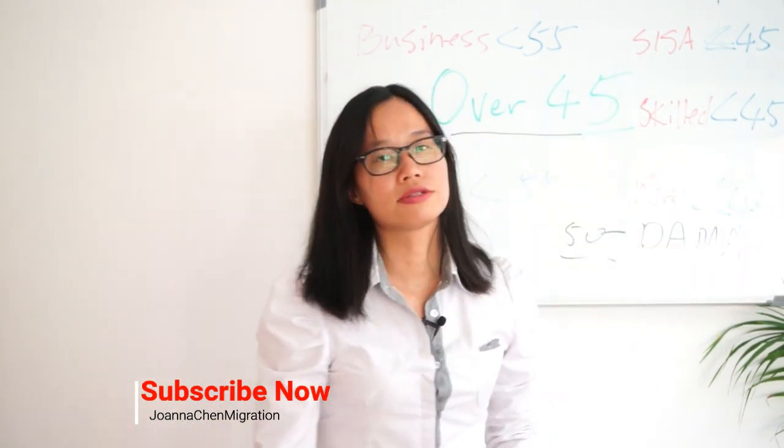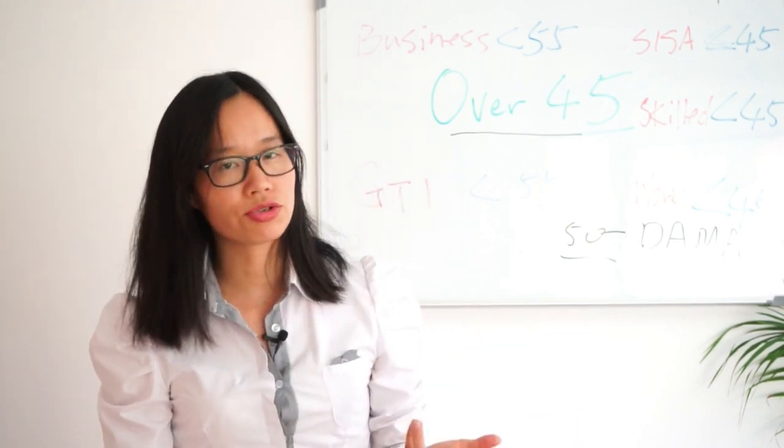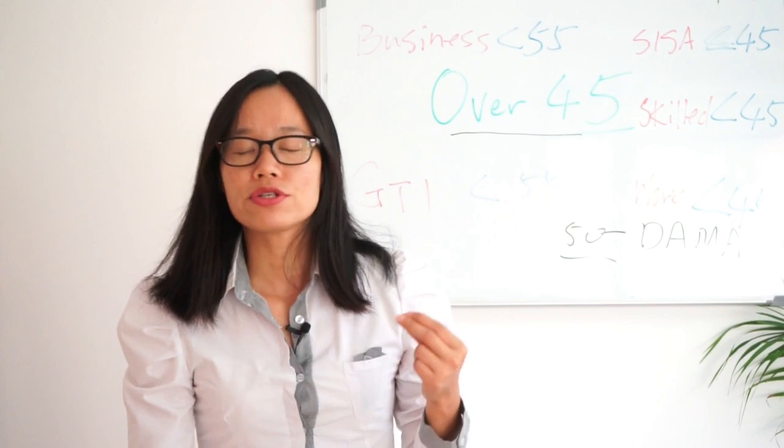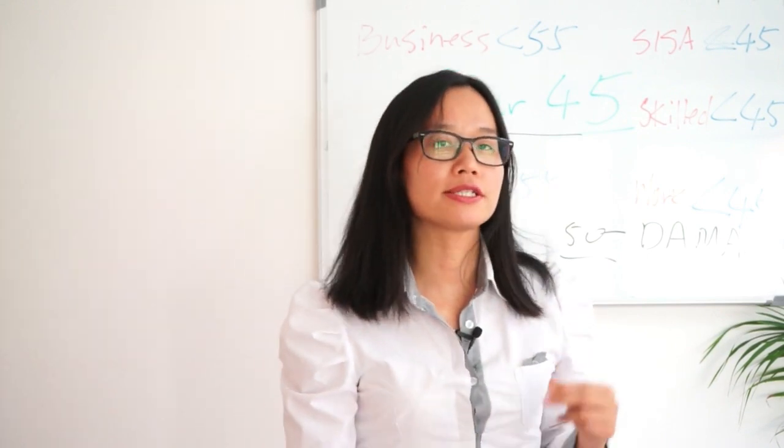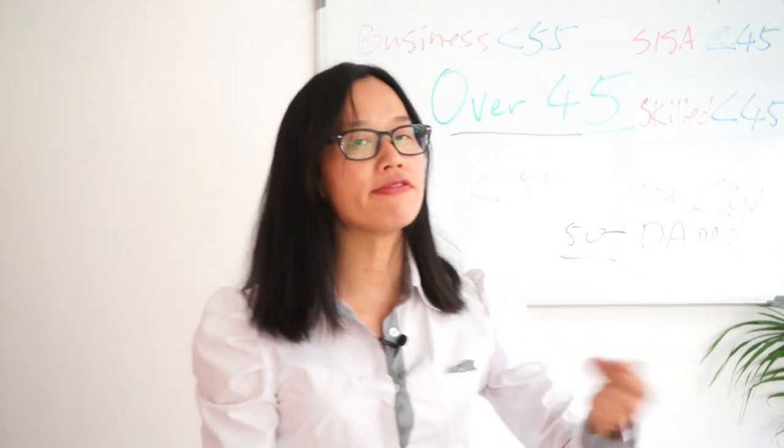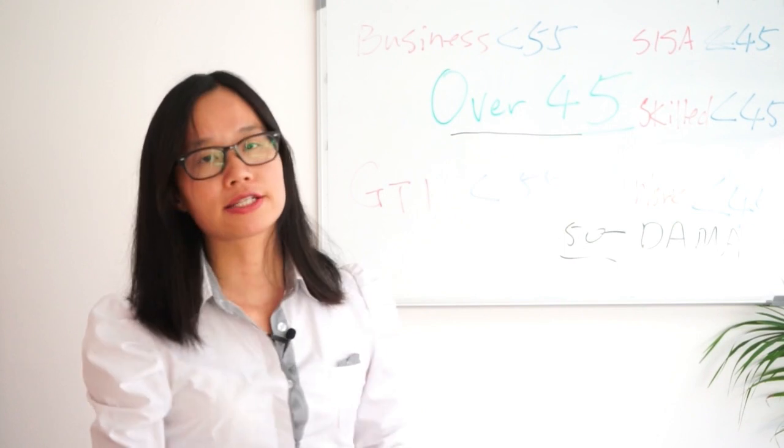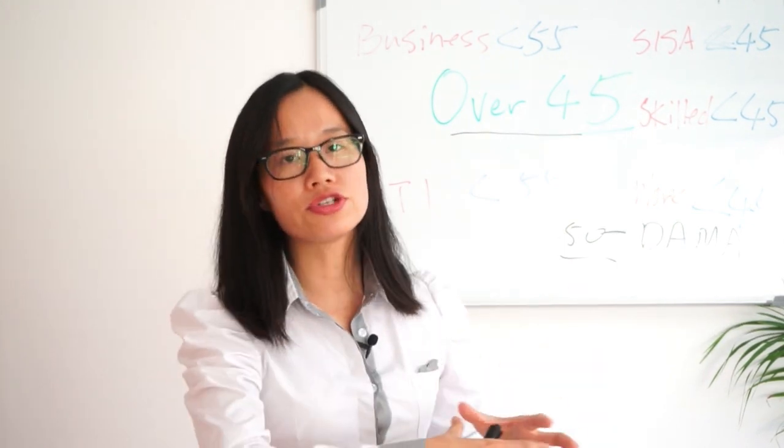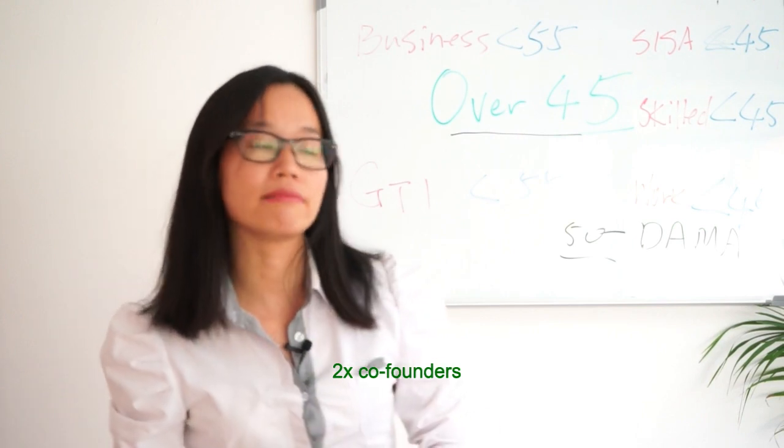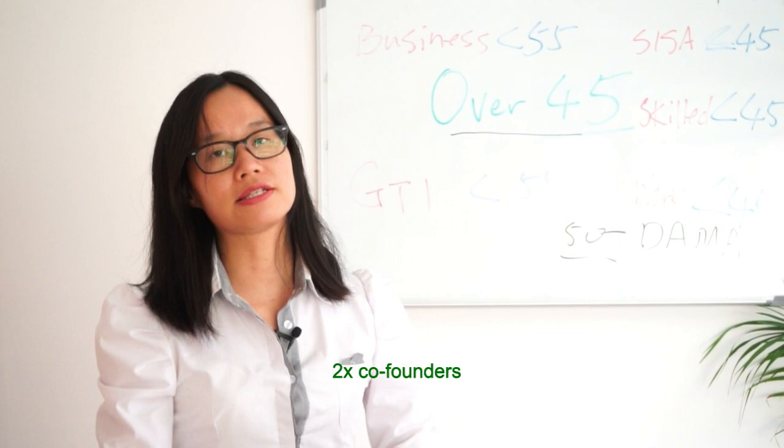Now, if you come here on SISA 408, what is the option? You have to be under 45. This way can work around because SISA is approved not on people but on project. Your innovation idea, your business plan is approved on a project. Because of the project, it allows you to have several, at least two founders to participate in such project.